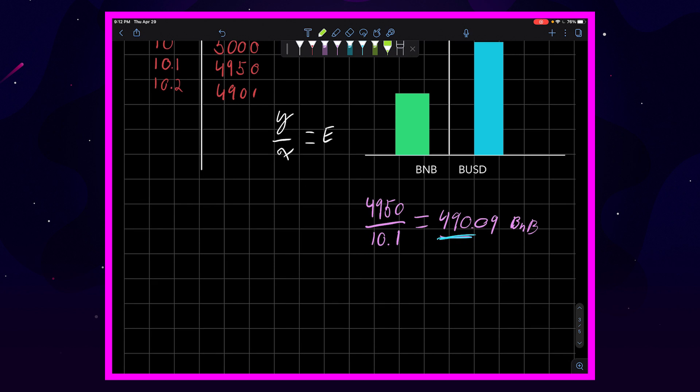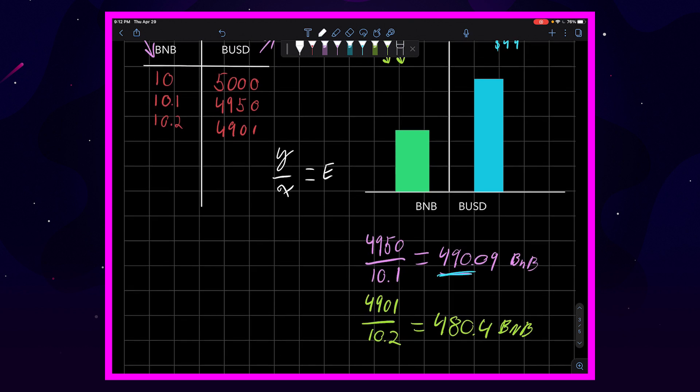And we jump in and do our favorite equation all over again, 4,901 over 10.2. And this time we get 480.4 per BNB. So you can understand that every little bit that we put through the pool changes the price.